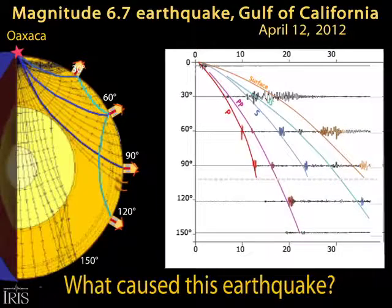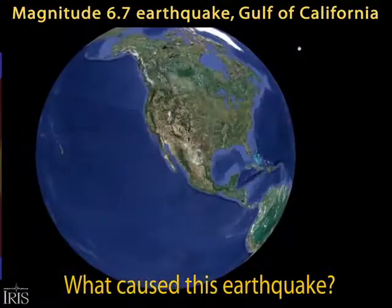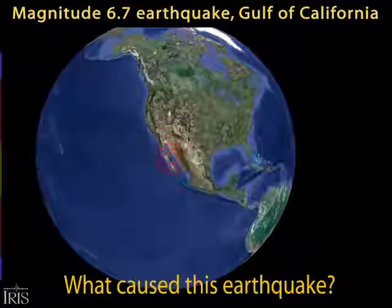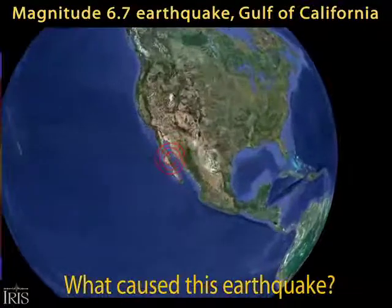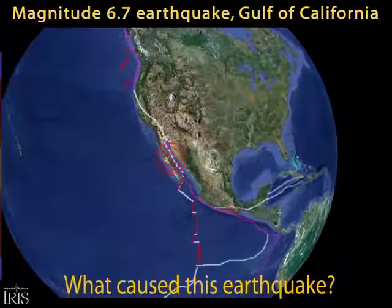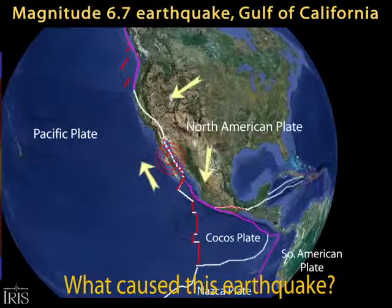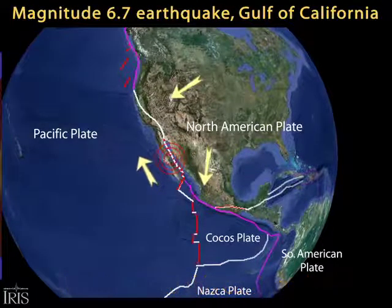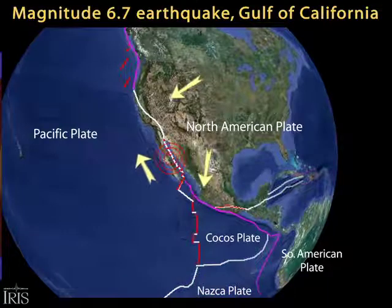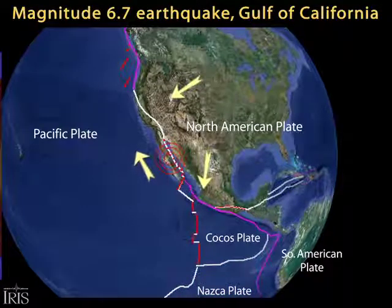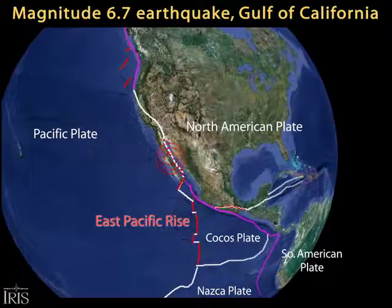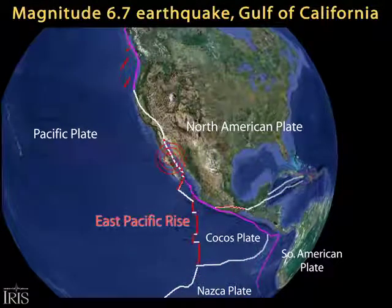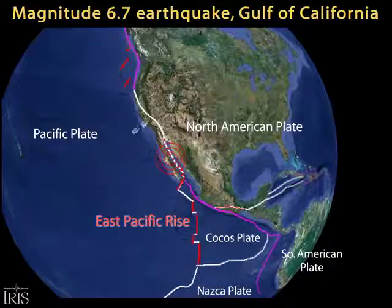So what caused this earthquake? The Gulf of California marks a major boundary between the North American and Pacific plates. It's a transitional corridor that connects the East Pacific Rise south of the Gulf with the San Andreas Fault of California to the north.